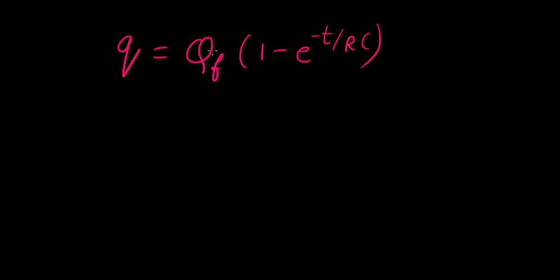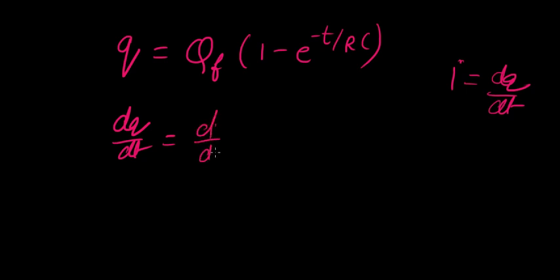So just differentiating this equation, we get what? dq over dt equals, let's put the qf back as ce itself. So d by dt of ce minus ce times e power minus t over rc.